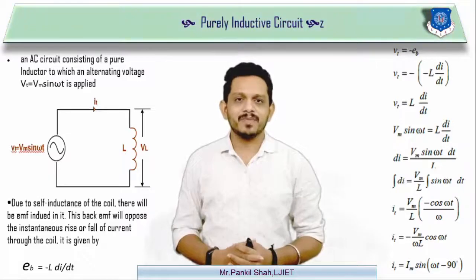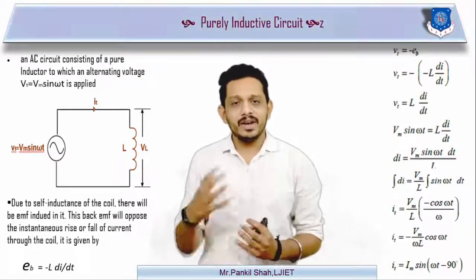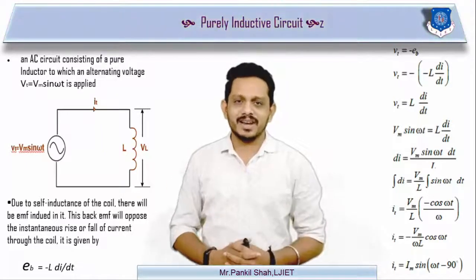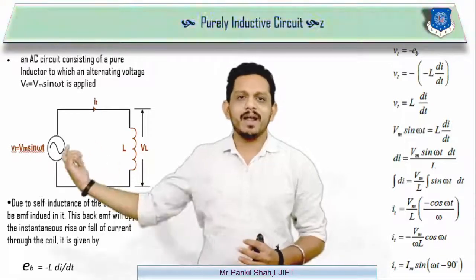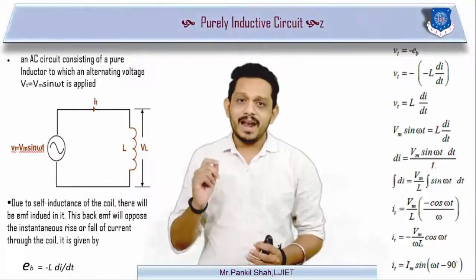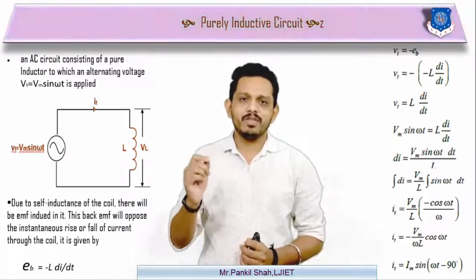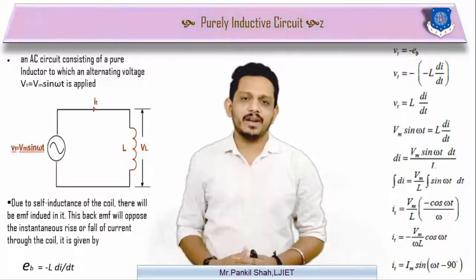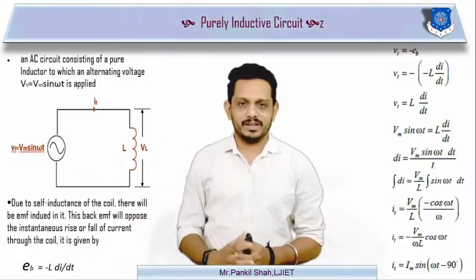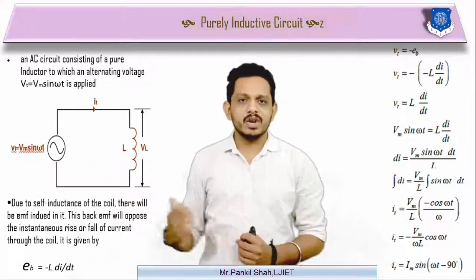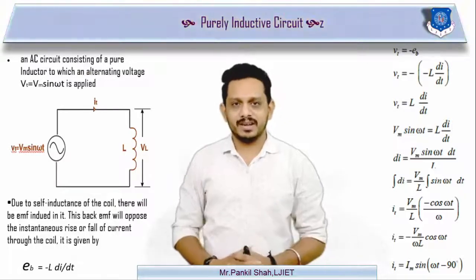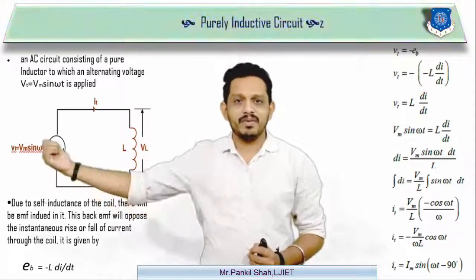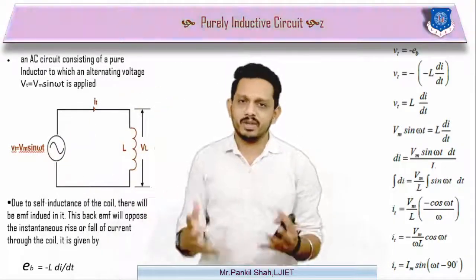Let's start with the equation of voltage and current, and find the relationship and phase angle between them. Consider this circuit having an inductor as an element with an AC source applied. V(t) is the instantaneous value of the voltage applied, and its equation is V(t) = Vm sin(ωt). This voltage is the reference voltage applied to the inductor. Whenever we apply this voltage, some current I will start flowing through the inductor, and our aim is to find the equation of this current.